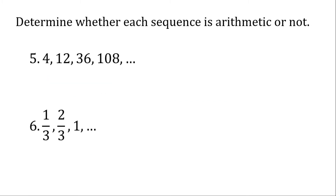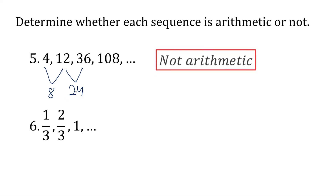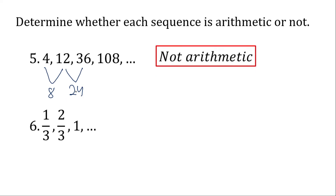On number 5, let's try to do this. 12 minus 4 is 8, and 36 minus 12 is 24. These two are not the same, so they don't have a common difference. Therefore, it is not an arithmetic sequence.